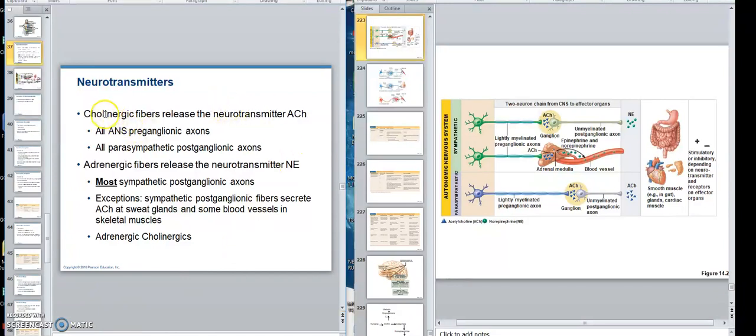Cholinergic fibers, that's acetylcholine fibers, release the neurotransmitter acetylcholine. All autonomic nervous system pre-ganglion fibers secrete acetylcholine. All parasympathetic posts do.